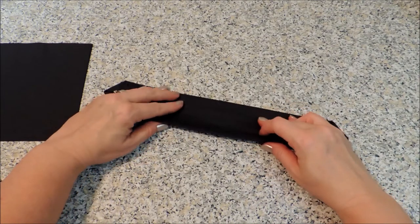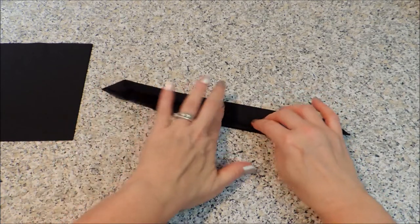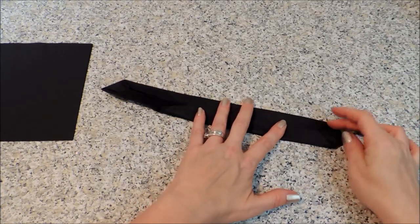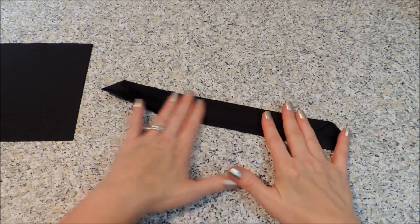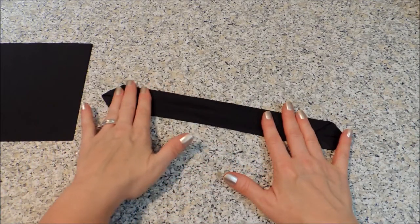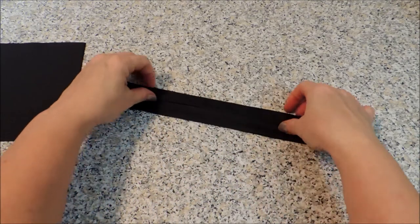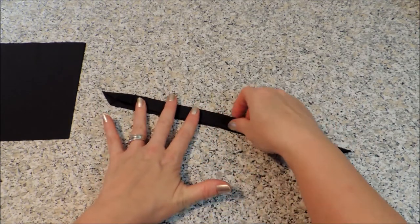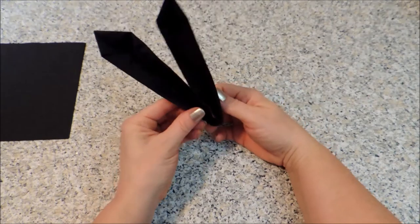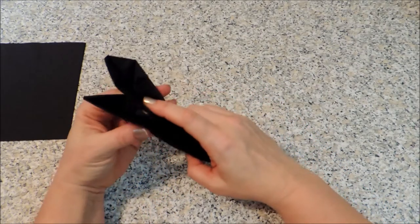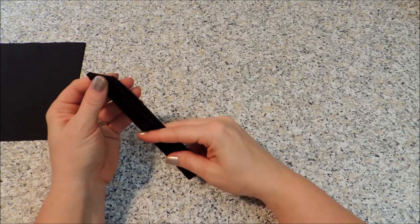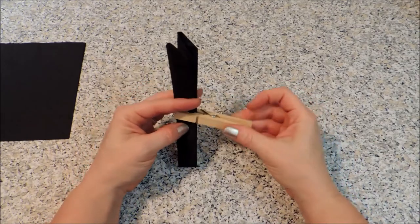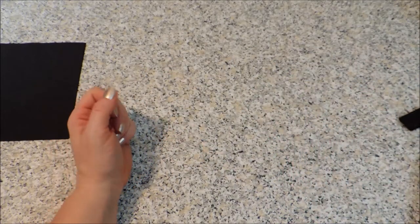Now fold that whole thing in half, and then we're going to fold the length in half. We're just going to put a clip on that to hold it together and set it aside while we do our other napkin.